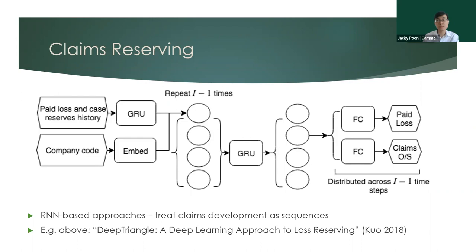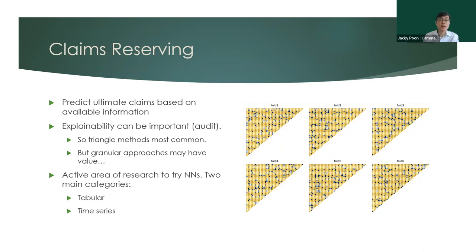One such architecture is from the paper 'Deep Triangle' by Kevin Kuo. It feeds in the history and attributes about claims information into a GRU, passes it through a fully connected layer, and jointly outputs the paid and claims outstanding amounts. The key challenge to overcome is explainability — getting your auditors comfortable with the approach. The potential value is discovering things about claims development at the granular, claim-by-claim level that you can't see from aggregating into triangles.